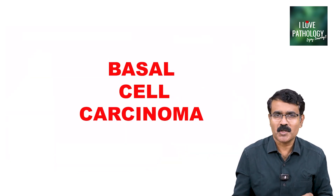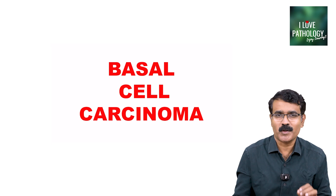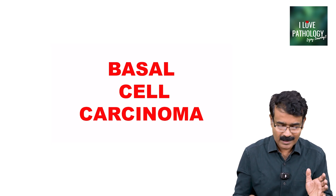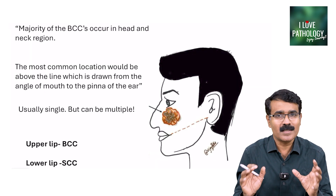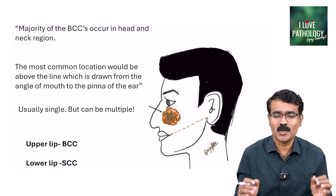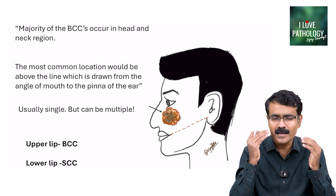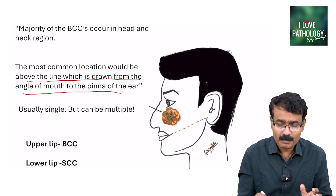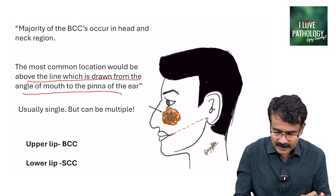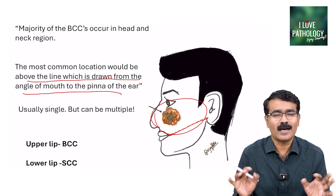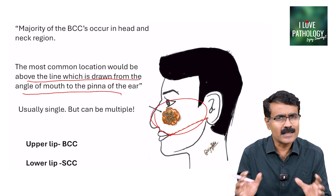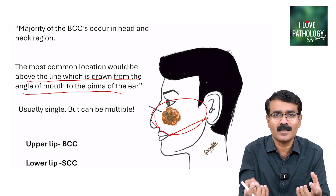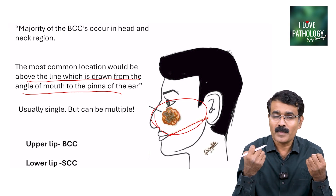The next slide is basal cell carcinoma — one of the most classic slides you can get in a practical examination. The most common location of basal cell carcinoma is the head and neck region, particularly the face — above the line drawn from the angle of the mouth to the pin of the ear. It is usually single and ulcerated, which is why it is called rodent ulcer — it burrows into the skin.